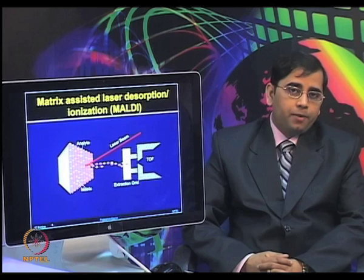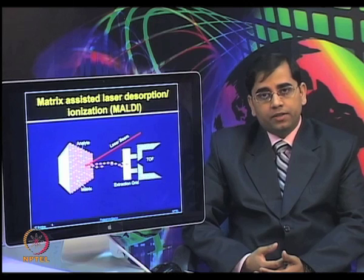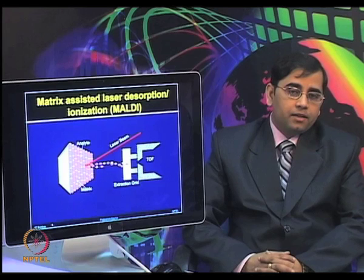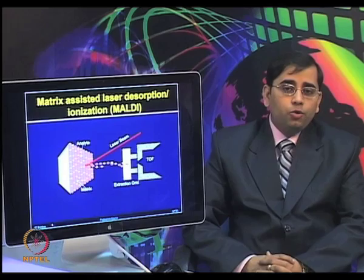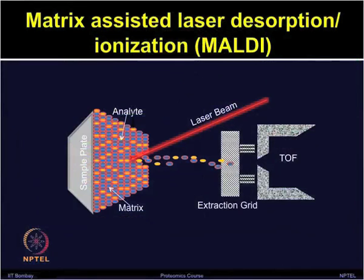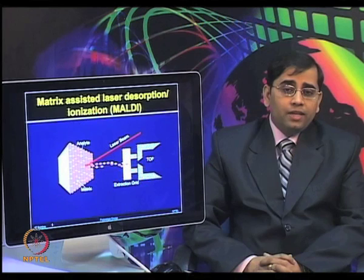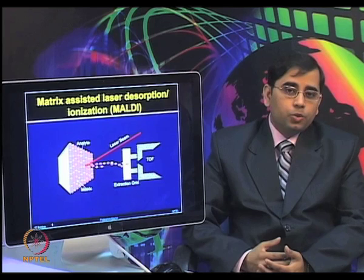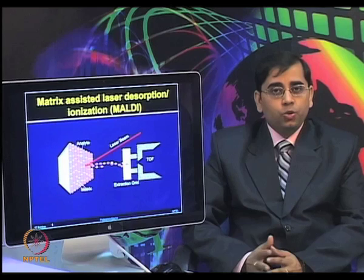Once you have selected a matrix for the experiment, the analyte and matrix can be dissolved in an organic solvent, after which they can be placed on the metallic target. The first left section of the slide shows you how to place the analyte and matrix together on the sample plate. Once placed on the target plate, you put it in the vacuum chamber and apply high voltage. These crystals are targeted with short laser beams, then rapid sublimation converts the analyte into gas phase ions. These ions, once generated, accelerate away from the target plate through the mass analyzer, which is the time of flight TOF tube, and they reach towards the detector.